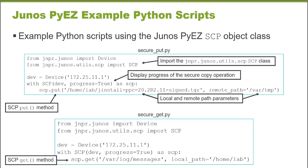In another simple example, I wanted to retrieve a file rather than upload one to a Junos device. I was able to discover there's a valid get method for the secure copy object. I can specify what I want to get, from where, and where to place it on the local system — using the local path option and specifying both the local path and the remote path. Having that documentation and being able to see all the options really helped me take existing Python scripts and modify them to fit my particular use case.